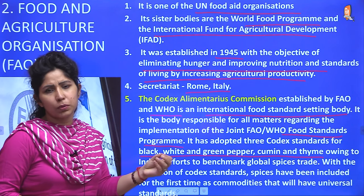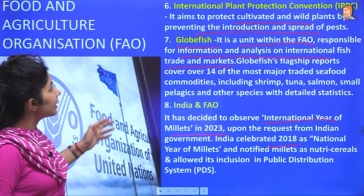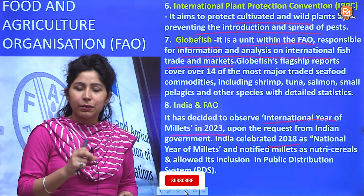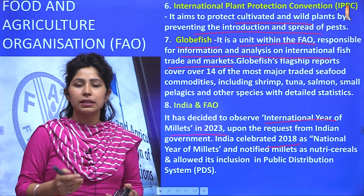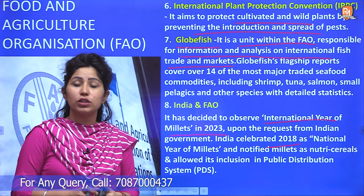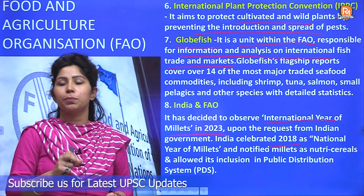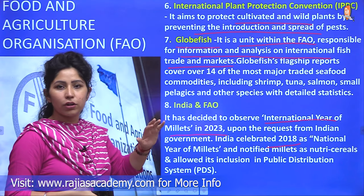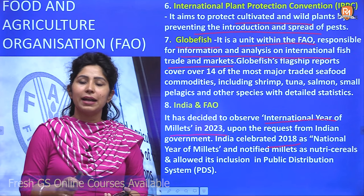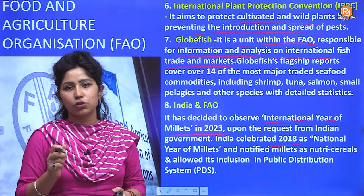Also related to FAO is the International Plant Protection Convention. It aims to protect cultivated and wild plants from the spread of pests. One of the major roles of FAO is to check locust infections — locusts come every year and damage agricultural fields and harm the productivity of many countries. This convention regulates the spread of pests in both wild and cultivated plants, including safeguarding biodiversity.